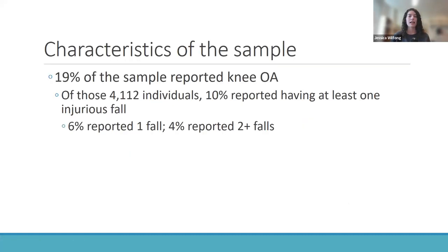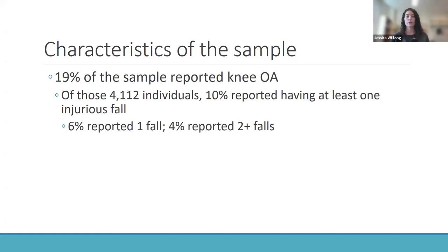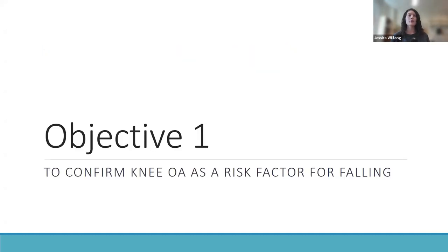Moving on to findings. Some general characteristics of the sample: 19% reported knee OA — slightly higher than background estimates because CLSA participants are older and knee OA prevalence increases with age. Of those just over 4,000 individuals with knee OA, 10% reported having at least one injurious fall at follow-up: 6% reported one fall and 4% reported two or more falls. We'll now go objective by objective through our findings.